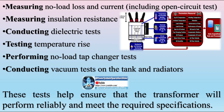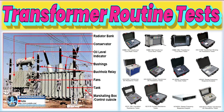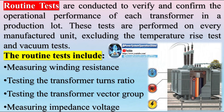The routine tests include: measuring winding resistance, testing the transformer turns ratio, testing the transformer vector group, measuring impedance voltage and short circuit impedance, measuring load loss including short circuit test, measuring no load loss and current including open circuit test, measuring insulation resistance, conducting dielectric tests, performing no load tap changer tests, and conducting oil pressure tests to check for leaks at joints and gaskets. These tests ensure that each transformer meets the required operational standards and performs reliably.